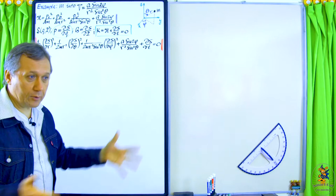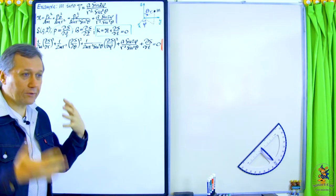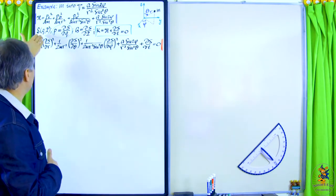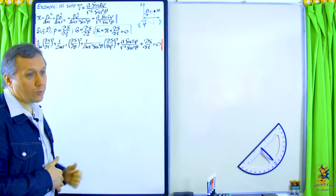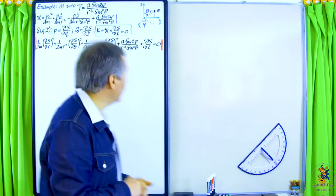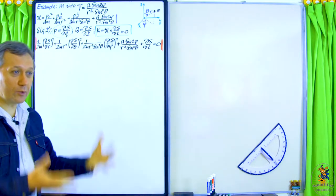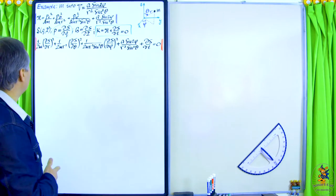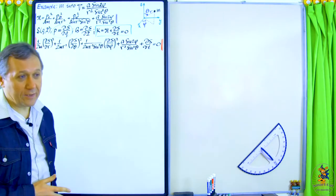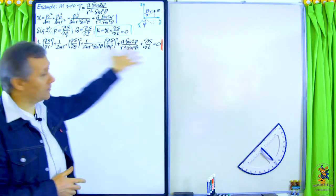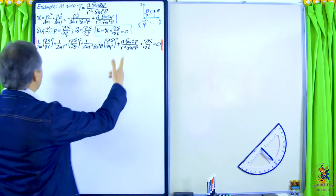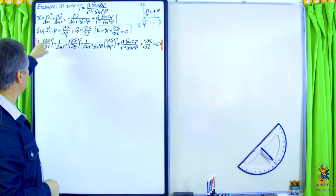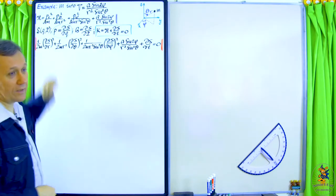As usual in the Hamilton-Jacobi equation, we use a generating function of the second type. We rename it S, which we call Hamilton's principal function, which depends on q and capital P. These two equations give us the transformation equations and expression for the new Hamiltonian, which is zero in this approach — we want to go to the place where the Hamiltonian is zero.